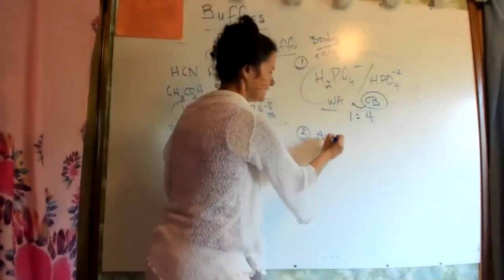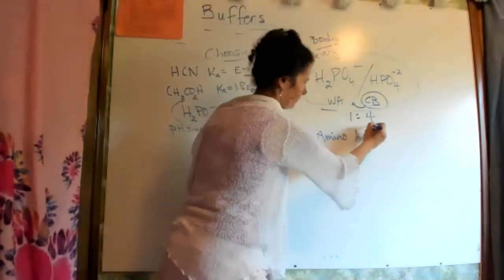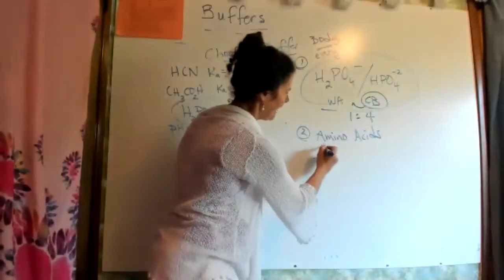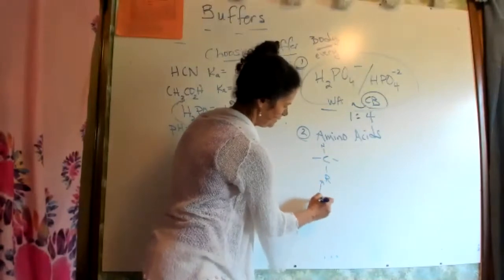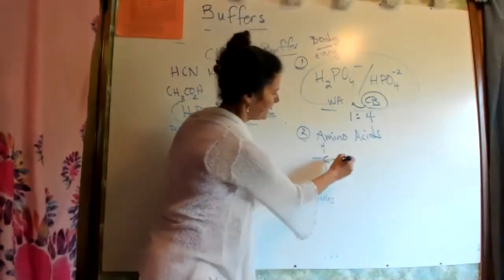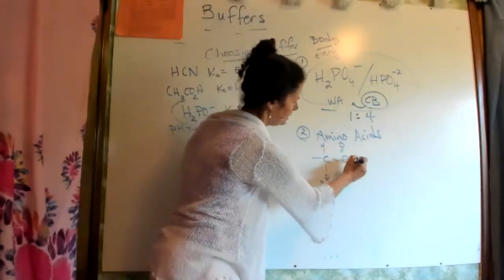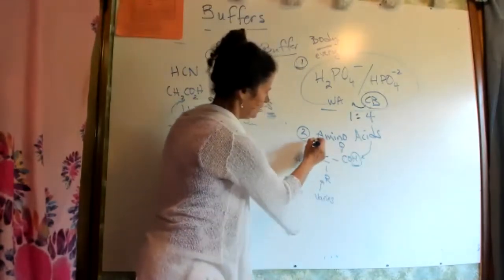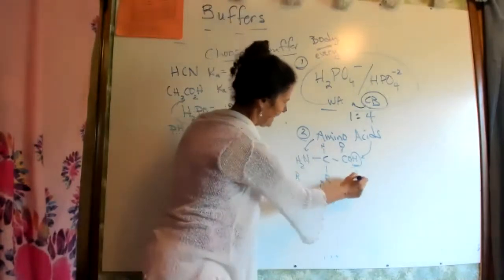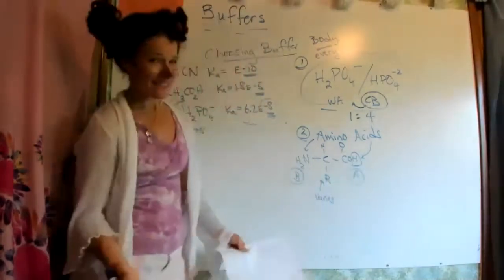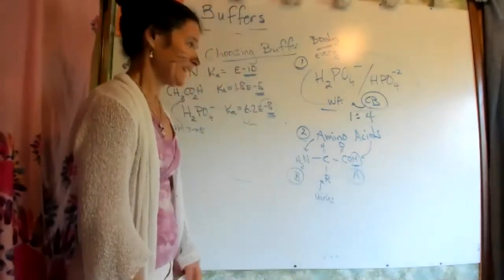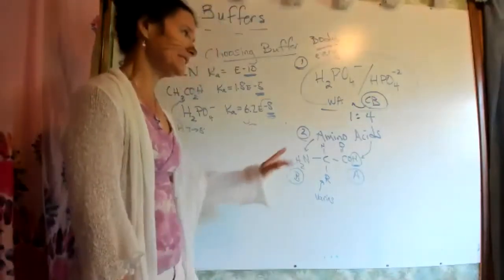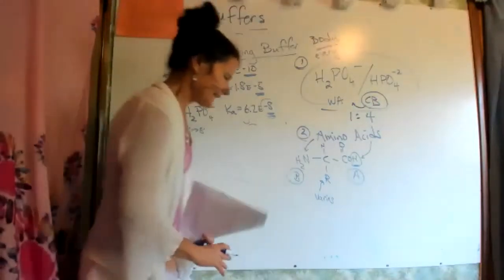The second body buffering system is amino acids. An amino acid has an acid group and an amino group — so it works as both an acid and a base, and it is a buffering system within our blood. Once amino acids are made into proteins, they can no longer do the buffering, but that is our second one.